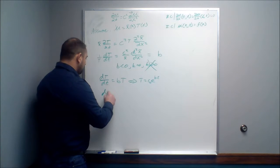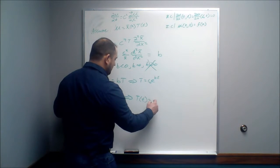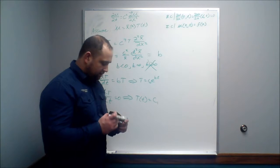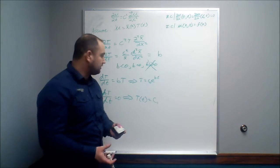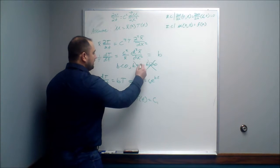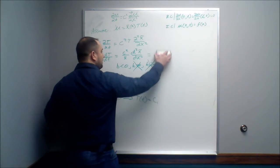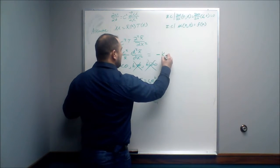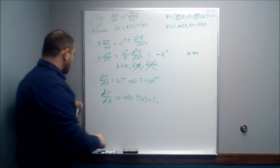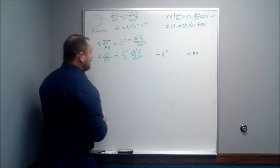If dT/dt = 0, that tells us the time component equals some constant — but that doesn't happen either. For example, if I heat up a bar to 100 degrees and come back 10 minutes later, it's not still 100 degrees; the temperature changes over time. So b does not equal 0. That leaves us with the only option: b is less than 0. We replace b with −k², where k ≠ 0.